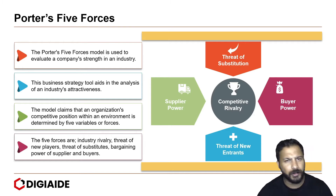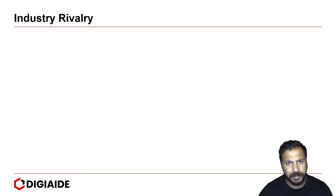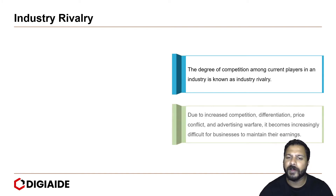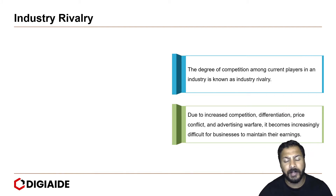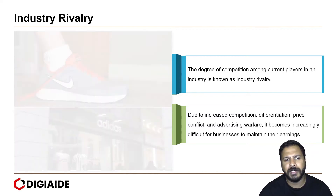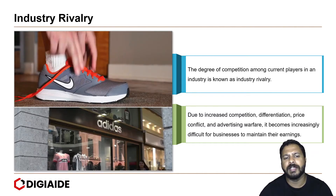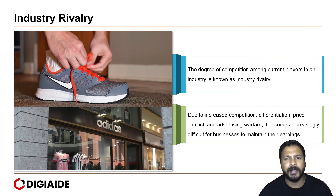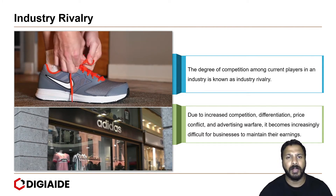Let's look at each one of them briefly, starting with Industry Rivalry. The degree of competition among current players in any industry is known as Industry Rivalry. Due to increased competition, differentiation, price conflict, and advertising warfare, it becomes increasingly difficult for businesses to maintain their earnings. A great example is the Industry Rivalry between Adidas and Nike in the Athletic Apparel and Footwear industry.